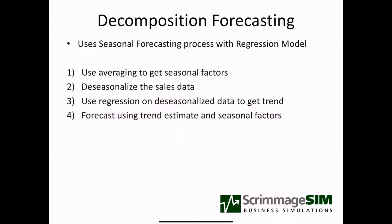The first approach is decomposition forecasting. Seasonal factors are added to our regression model so that we can forecast a trend into the future, then adjust that trend line up or down based on the season. The method we're going to use has four steps. First, we're going to use averaging to get seasonal factors — exactly what we did with the seasonal model — even though we have trends in our data. Then we're going to use those seasonal factors to de-seasonalize the sales data and take out the impact of the seasons.